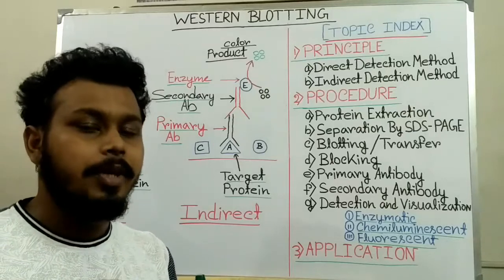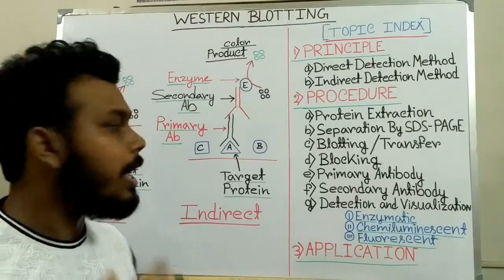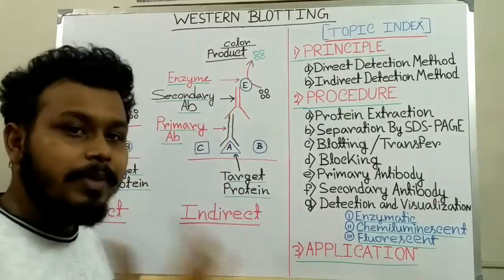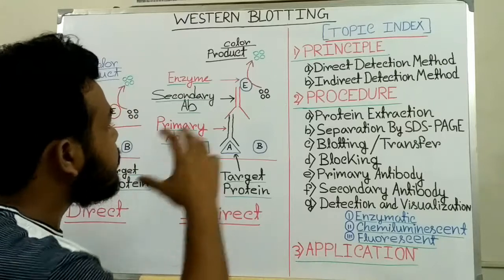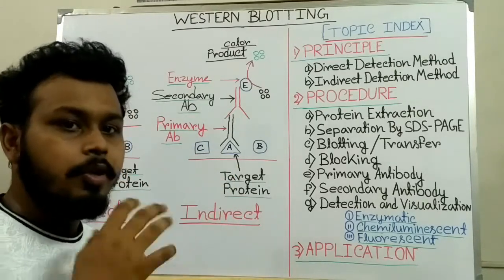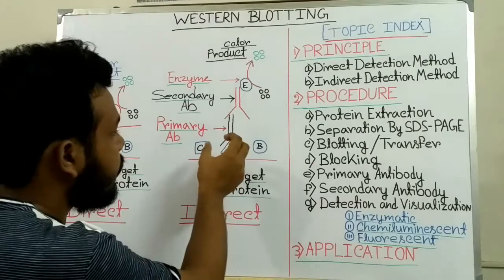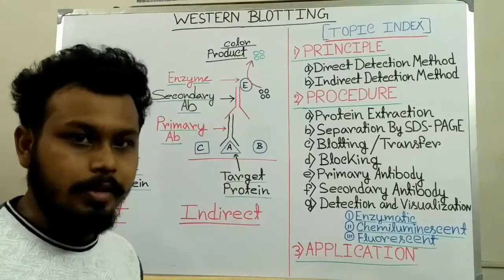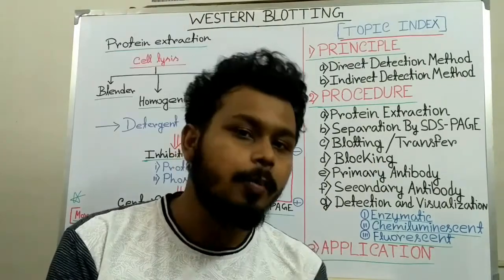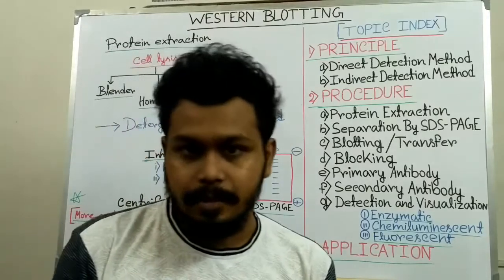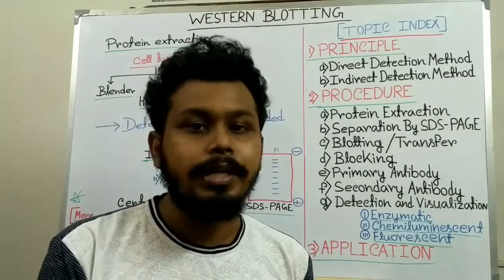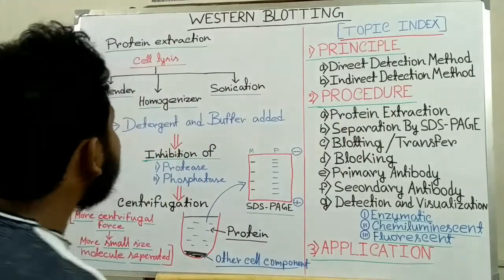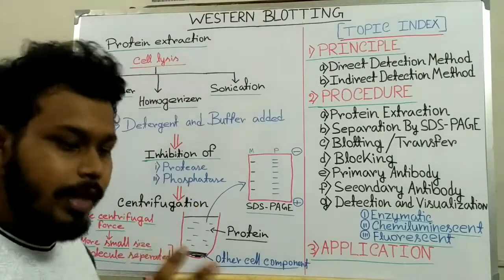The indirect detection method is more useful and sensitive than the direct detection method because the secondary antibody amplifies the signal. This makes it very sensitive and useful for protein detection. That is why we basically use the indirect method in western blotting. Now I will discuss the whole procedure of western blotting step by step. First, we have to extract the protein from the tissue or cell — this is called protein extraction, and it is done by cell lysis.